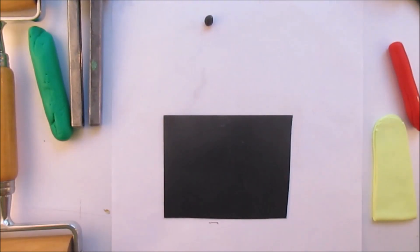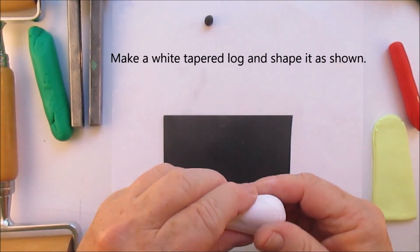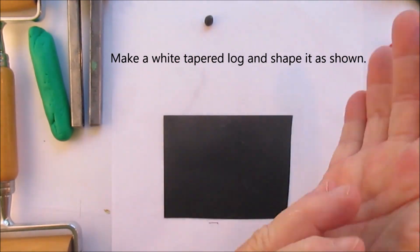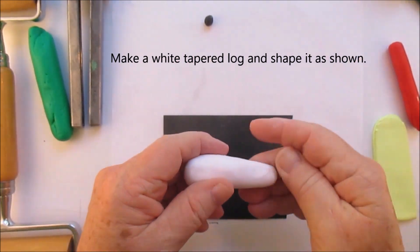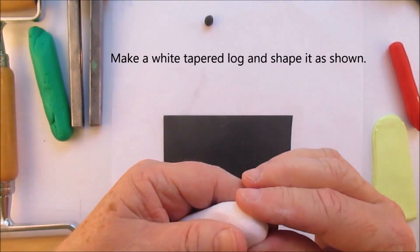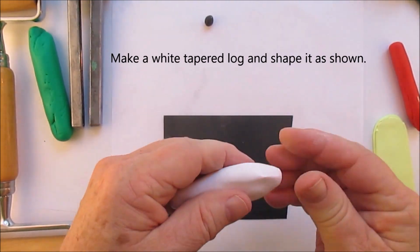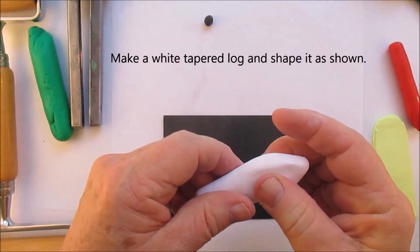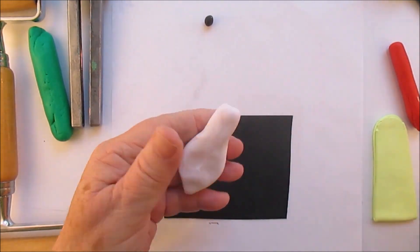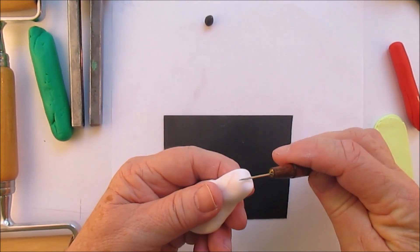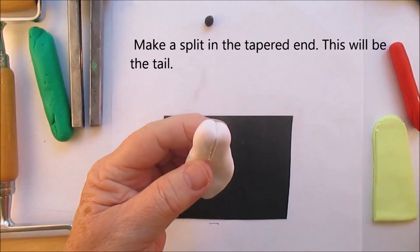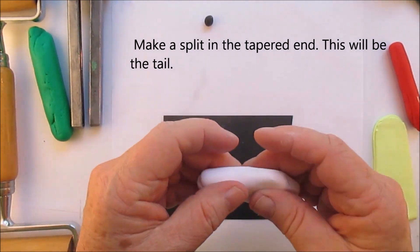If you have a fish cookie cutter, you can actually use that too. But we're going to start making a white tapered log. You can change the color of your fish, but I thought the white would stand out on the tree. Just shape it the way I'm doing. Don't make him real thin. We all know that these ornaments are not three-dimensional, that they do have a flat back, but don't make them super thin.